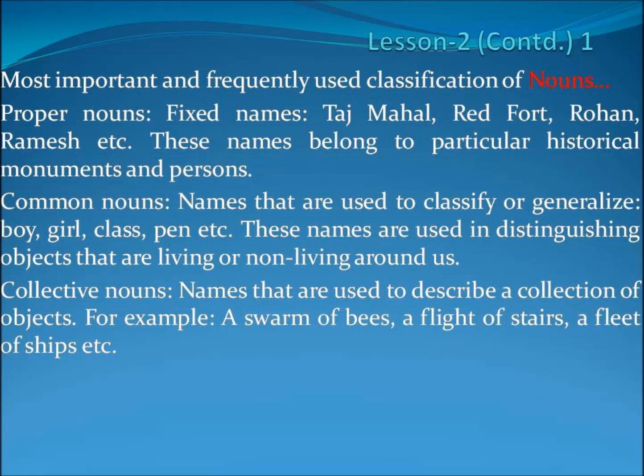Collective nouns are nouns that are used to describe a collection of objects. For example, a swarm of bees, a flight of stairs, a fleet of ships. So far we have discussed three kinds of commonly used nouns: proper, common, and collective.